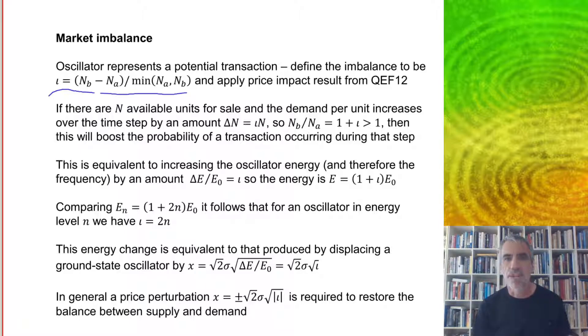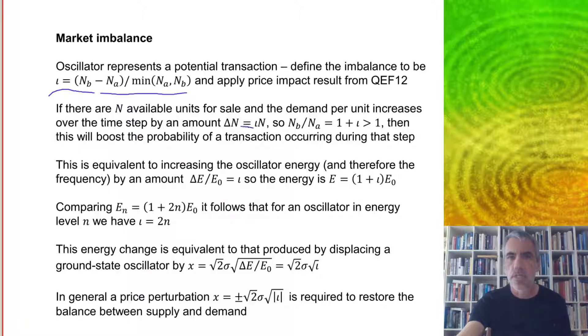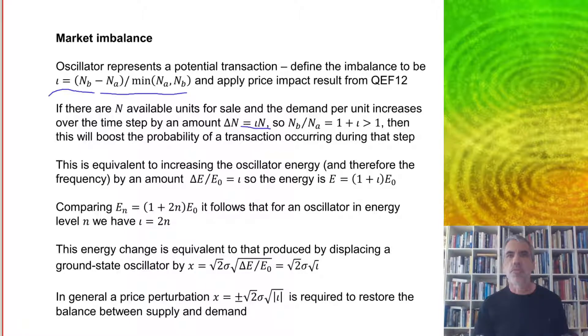So for example, if there are N available units for sale and the demand per unit increases by some amount, IOTA times N, then this will boost the probability of a transaction occurring during that step. And this is equivalent to increasing the oscillator energy and therefore frequency by an amount, a proportionate amount equal to IOTA.